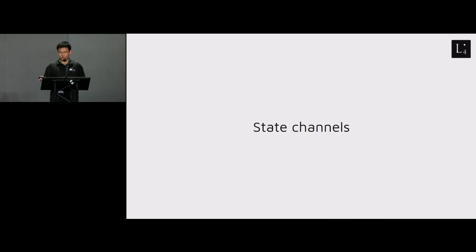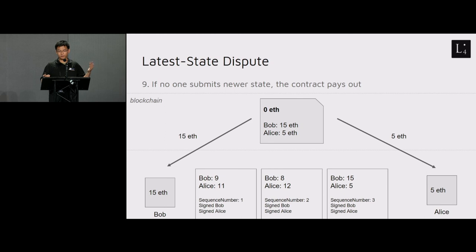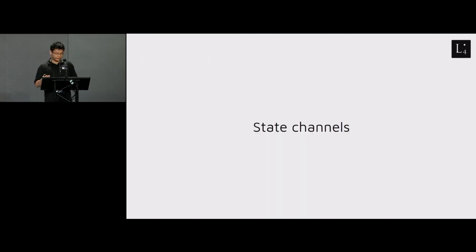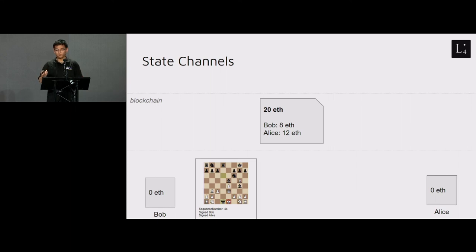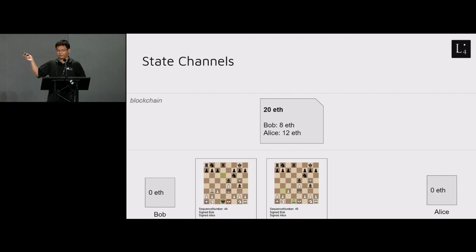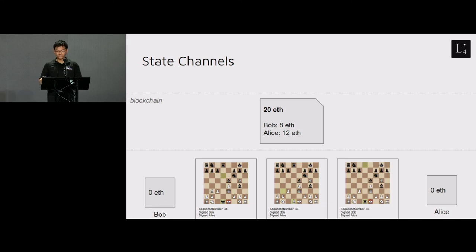State channels generalize this concept. In the payment channel system, the off-chain state is just two numbers — Bob's balance and Alice's balance. State channels allow us to generalize this to different forms of state. For example, if Alice and Bob want to enter a chess game where the winner gets 20 ETH, that works on a state channel. The state instead of balances is the state of a chessboard — eight by eight squares. Bob produces a new message showing his move, with a higher sequence number that both can sign, and so on.